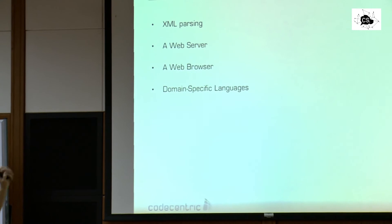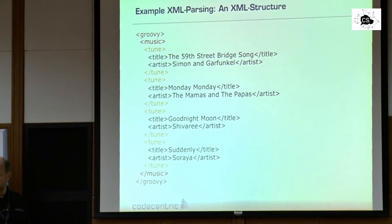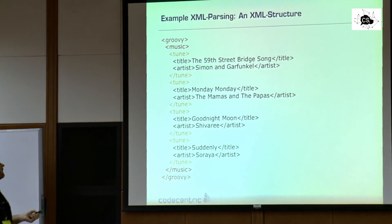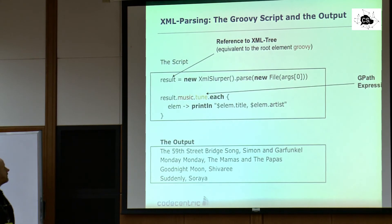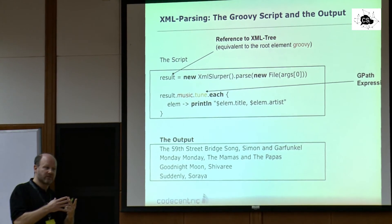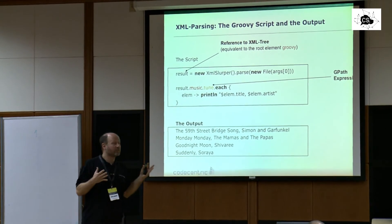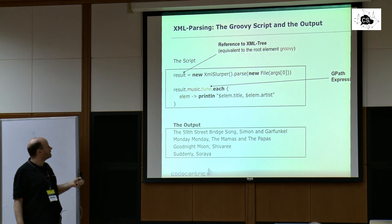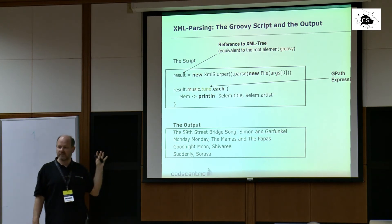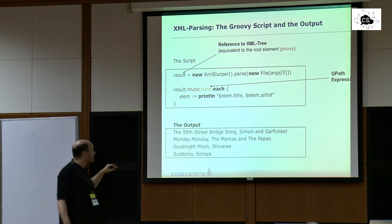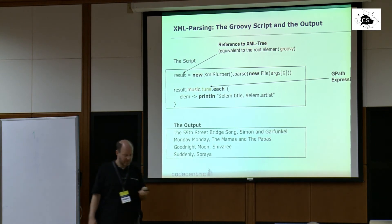XML parsing example: here is a normal XML with a root Groovy element, then music, tunes, title, artist and so on. This program reads in the whole XML, parses it, creates an object tree from it which you can navigate however you want, and then prints out for each tune the title and the artist. So this is XML parsing in Groovy. Now imagine wanting to do the same thing in Java — this is no longer fun.